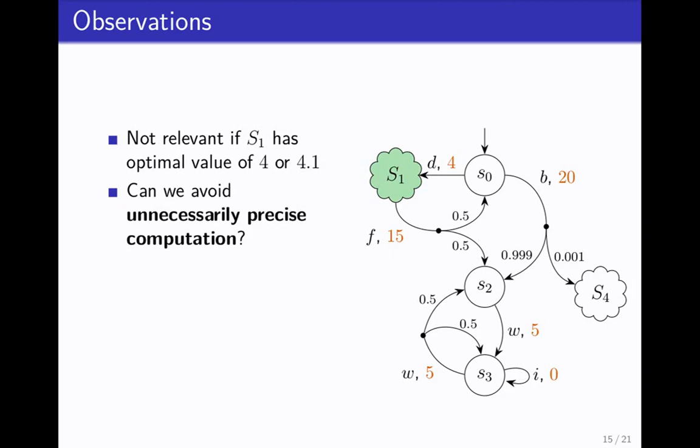We made two observations. The first observation is that, consider TOM Industries now released a new, improved version of the robot, where the dancing subroutine is really super advanced and there are a million states in there. Same with, they actually bother to implement what happens after the backflip and there are 10 million states after there too. If we somehow can get a bound on what's happening inside this dancing subroutine, it doesn't matter what's the precise value. If it has a value of 4 or 4.1 or 3.9, it doesn't matter because down here we get something better. The first question is, can we avoid unnecessarily precise computations?